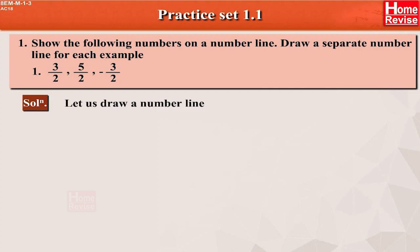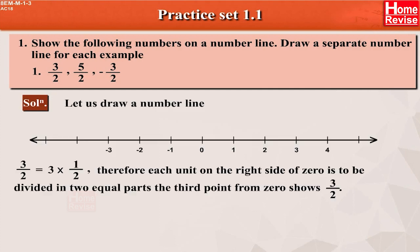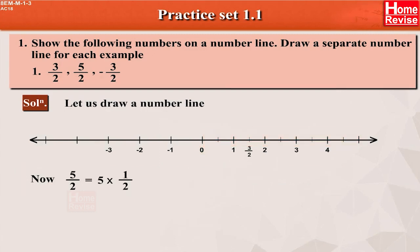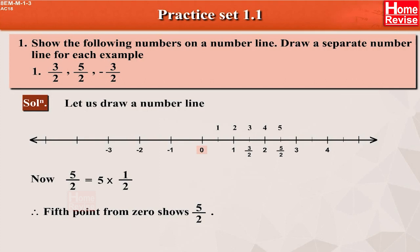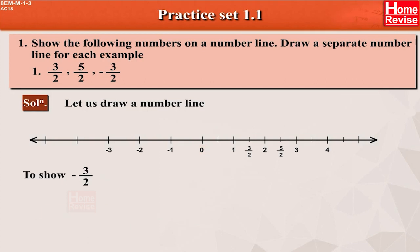Solution. Let us draw a number line. 3 upon 2 is equal to 3 multiplied by 1 upon 2. Therefore, each unit on the right side of 0 is to be divided in 2 equal parts. The 3rd point from 0 shows 3 upon 2. Now, 5 upon 2 is equal to 5 multiplied by 1 upon 2. Therefore, the 5th point from 0 shows 5 upon 2.